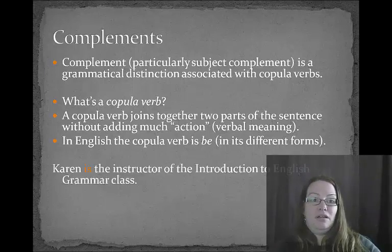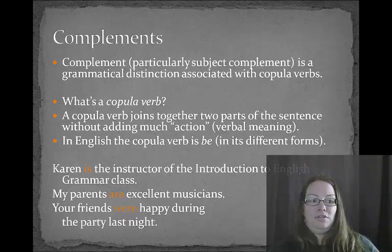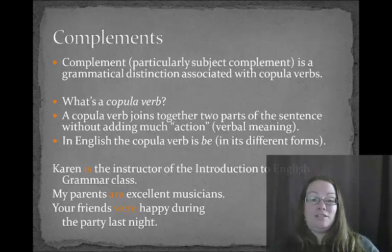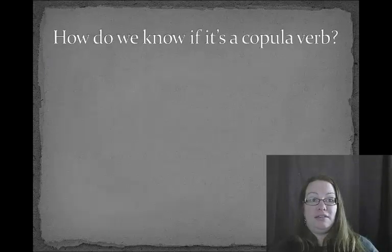Examples: 'Karen is the instructor of the Introduction to Grammar class,' 'My parents are excellent musicians,' and 'Your friends were happy during the party last night.' The 'be' form of the verb varies because it must agree with the subject and for tense. It basically joins the subject at the beginning of the sentence with the information at the end — its complement.